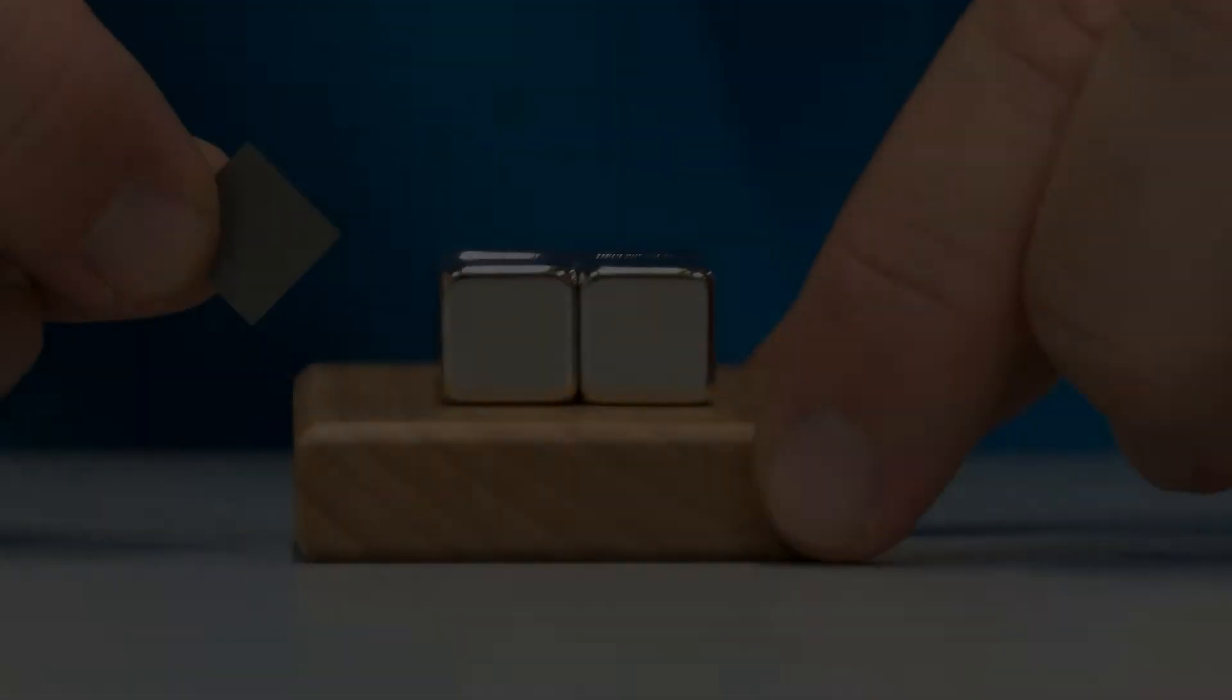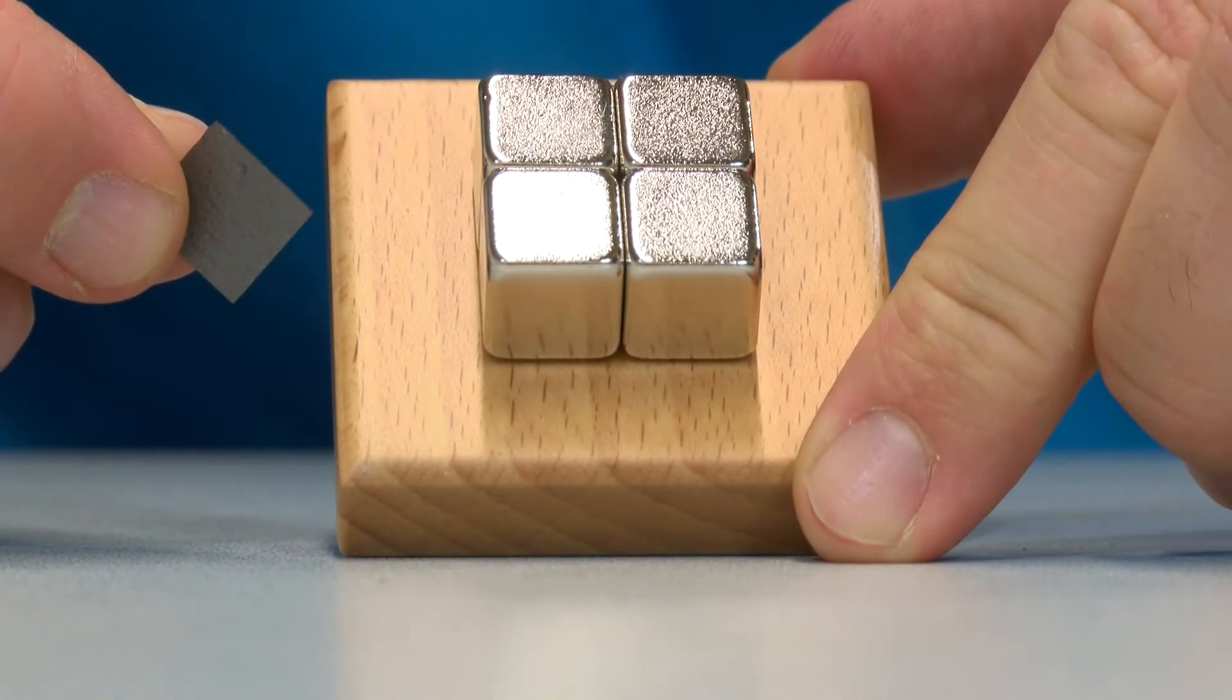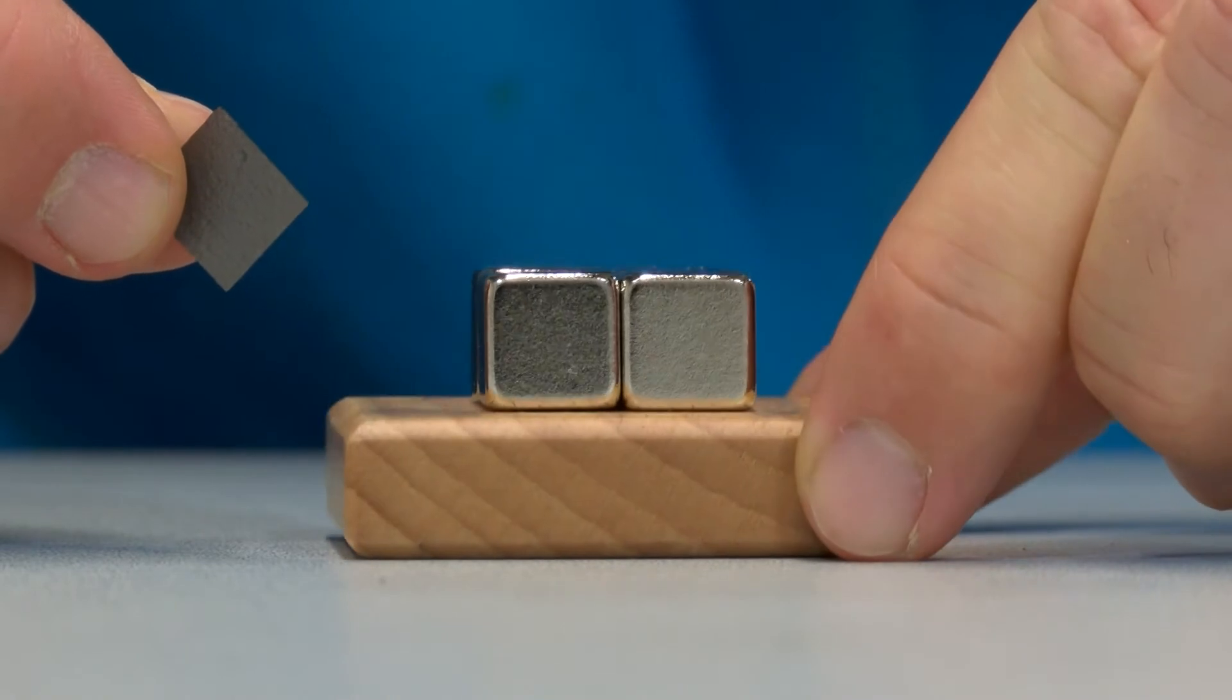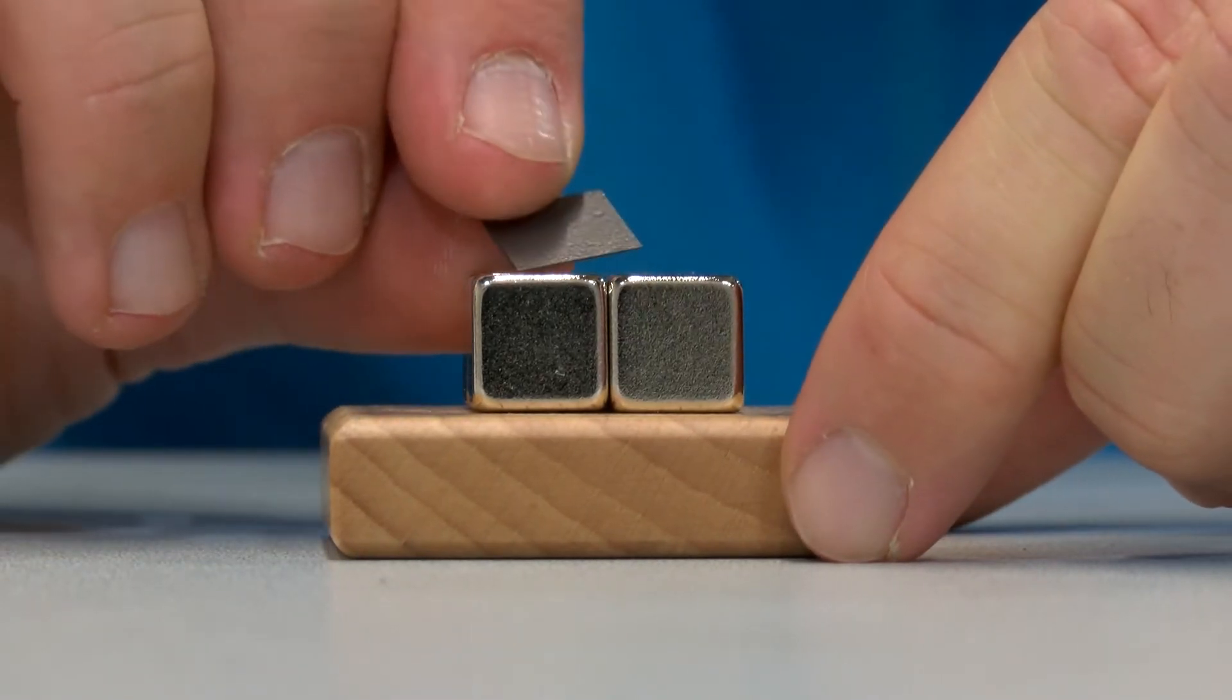Hi everyone, this video is about a special form of magnetism, namely diamagnetism. I've chosen the following experiment to show you the effect. For the experiment you only need four neodymium magnets and a piece of graphite.